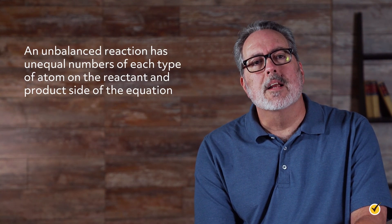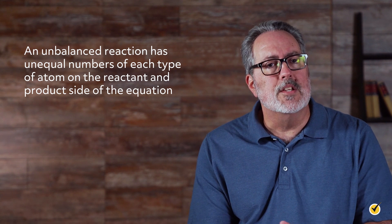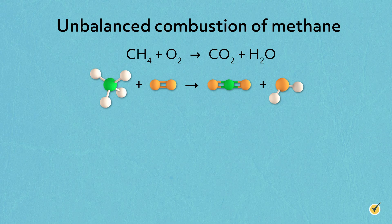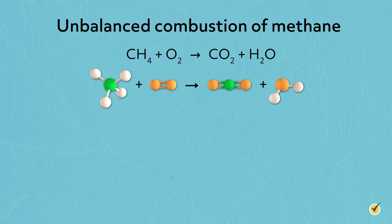Conversely, an unbalanced reaction has unequal numbers of each type of atom on the reactant and product side of the equation. For example, here's the unbalanced reaction of the combustion of methane.